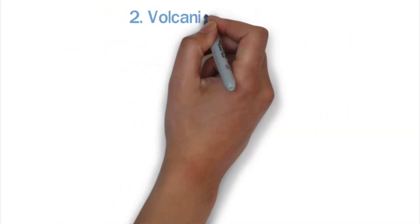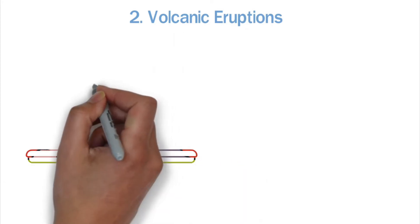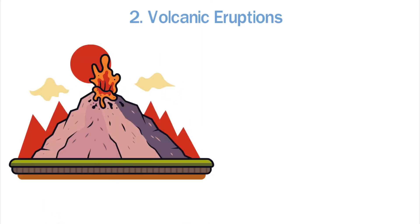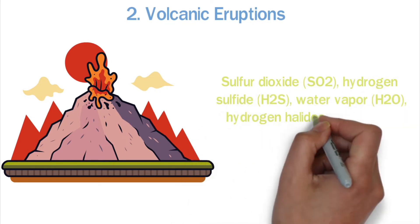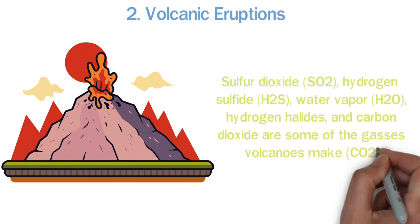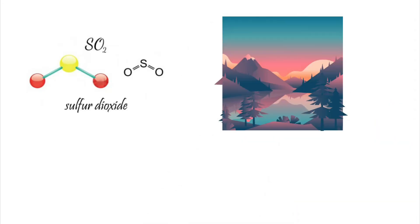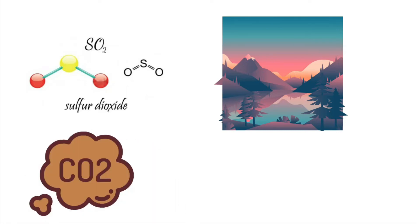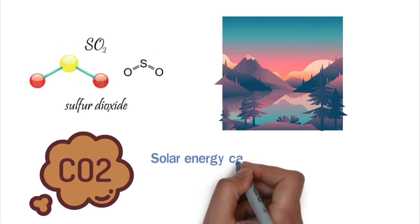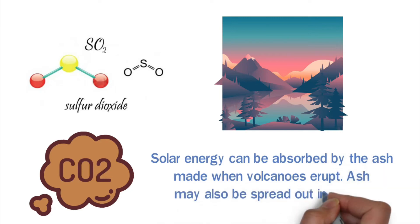Second, volcanic eruptions. Active volcanoes can erupt from time to time. Volcanic eruptions are bad for the environment because they cause dangerous gases to be released into the air. Sulfur dioxide, hydrogen sulfide, water vapor, hydrogen halides, and carbon dioxide are some of the gases volcanoes make. SO2 and H2O have been shown to cause global dimming, which makes the sky look dark. CO2, on the other hand, is to blame for the rise in global temperatures. Solar energy can be absorbed by the ash made when volcanoes erupt, and ash may also be spread out in the air.